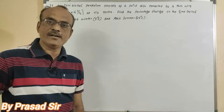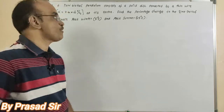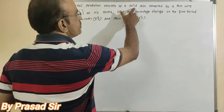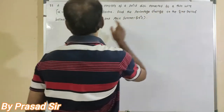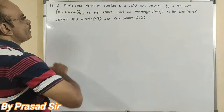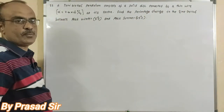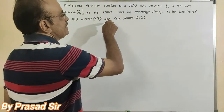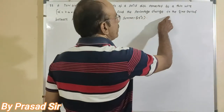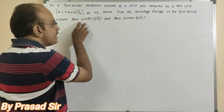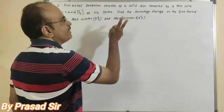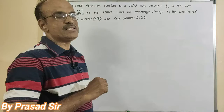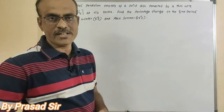Question number 33. A torsional pendulum consists of a solid disk connected to a thin wire. Alpha is equal to 2.4 into 10 to the power of minus 5 per degree centigrade at its center. Find the percentage change in the time period between peak winter and peak summer. Winter: 5 degrees centigrade, summer: 45 degrees centigrade.